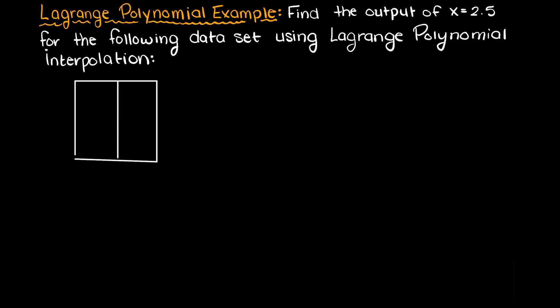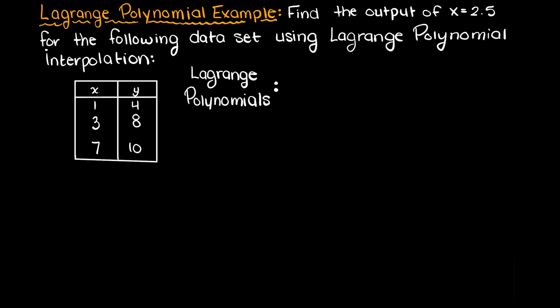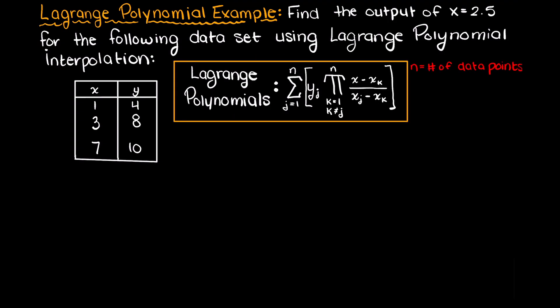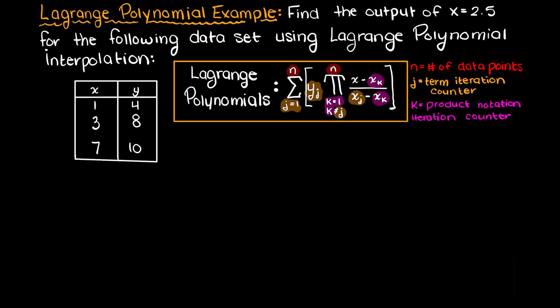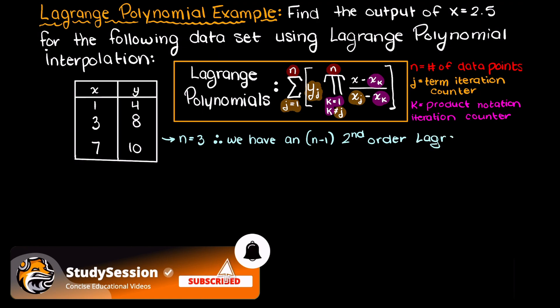We are asked to estimate the output of a given dataset using Lagrange polynomials. I am just going to take a second and write out the formula for a Lagrange polynomial here. As we discussed in the previous video on Lagrange polynomials, we talked about the degree of them, and since we have three data points presented, we will have three terms in our second order Lagrange polynomial.